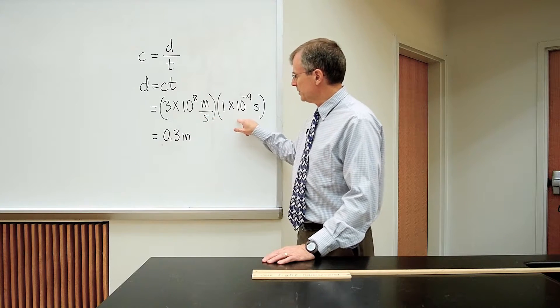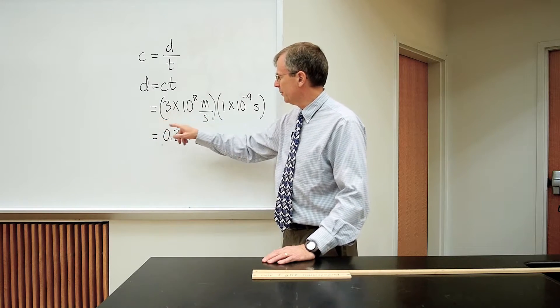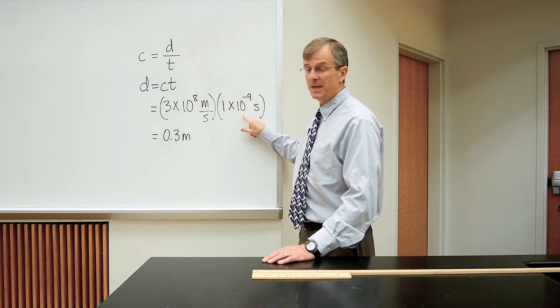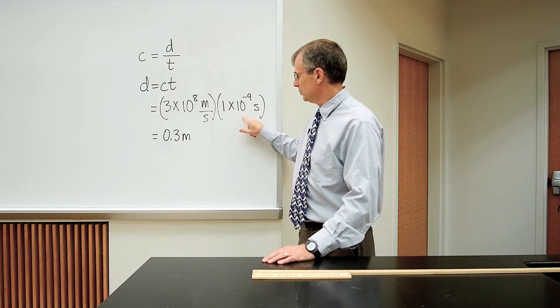If you multiply those two numbers together, you get a 3 out in front. A 10 to the 8 times 10 to the minus 9 is just 10 to the minus 1, which is 1 tenth.